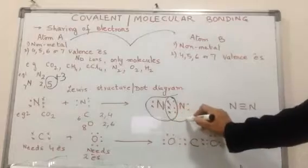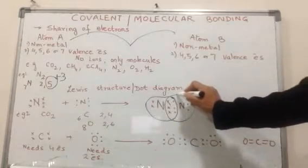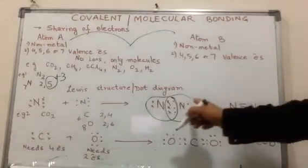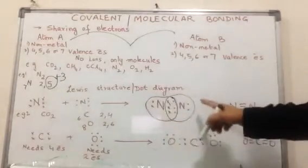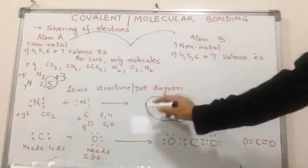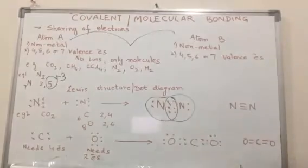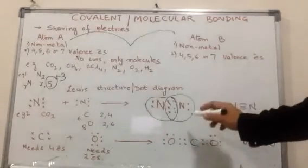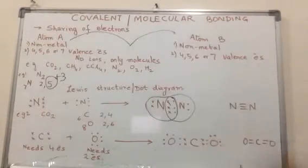You are not to include all the electrons. For the first nitrogen, we include only the shared pair of electrons and its lone pair. Same for the second one. This is the dot diagram or Lewis structure.